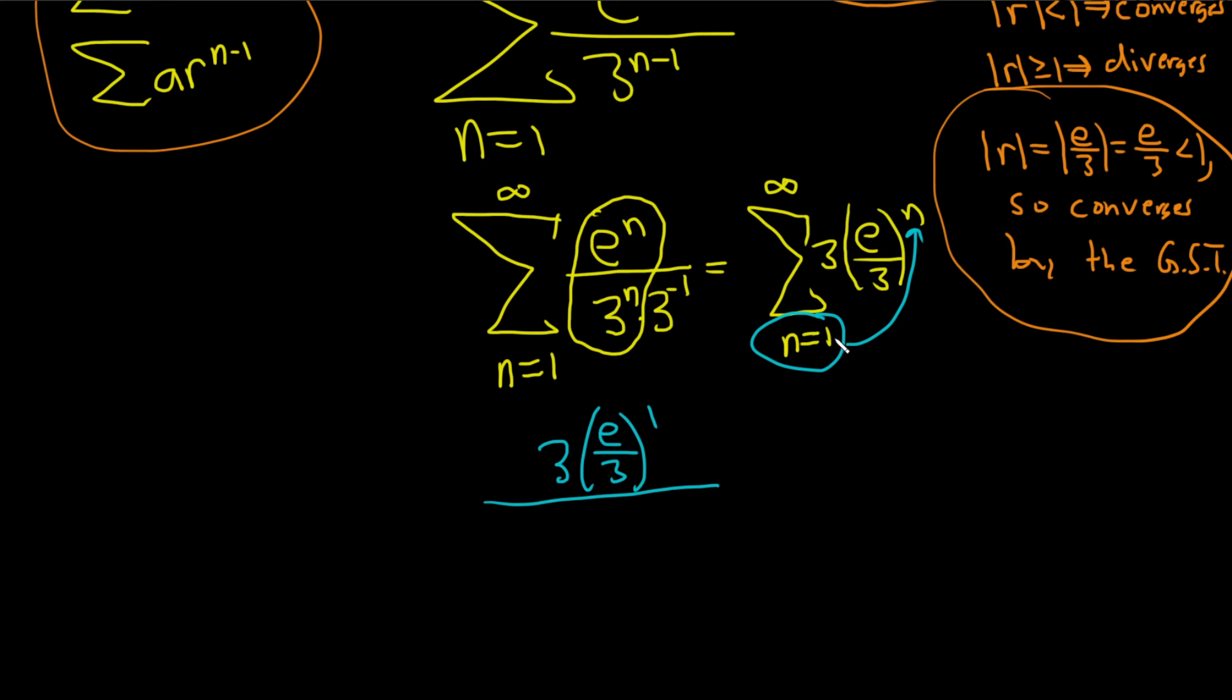Step one: take whatever number is here and plug it into your n always. If it's a 5, plug it in. If it's a 0, very likely to be a 0, plug it in. If it's a 2, plug it in. On the bottom it's always 1 minus r, so we said r was e over 3, so it's 1 minus e over 3.